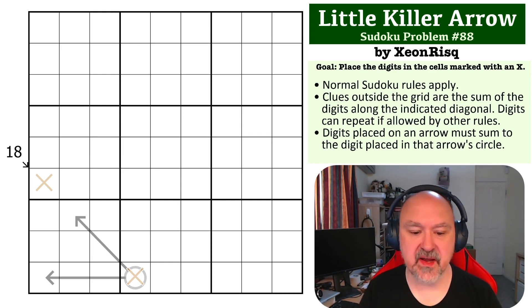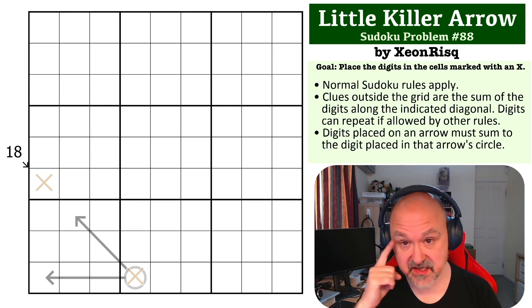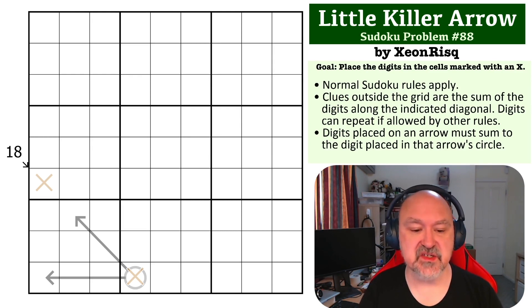The goal is to place the digits into the cells marked with Xs. The rules are: along the indicated diagonal pointed to by the arrow outside the grid, the digits must sum to the number listed next to that arrow, and there are arrows in the grid as well, where the digits placed on the arrows must sum to the digit placed in that arrow circle. Standard rules for this one.